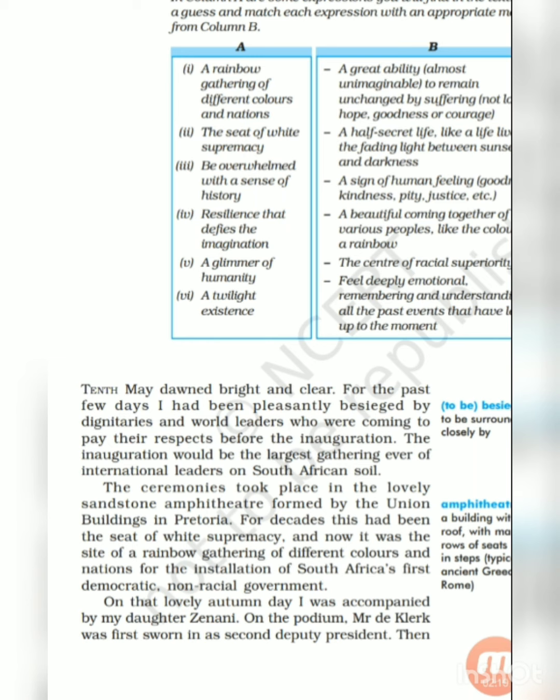The ceremonies took place in the lovely sandstone amphitheater — a building without a roof with many rows of seats rising in steps, typical of ancient Greece and Rome, like a stadium — formed by the Union Buildings in Pretoria. For decades this had been the seat of white supremacy, and now it was the site of a rainbow gathering of different colors and nations.